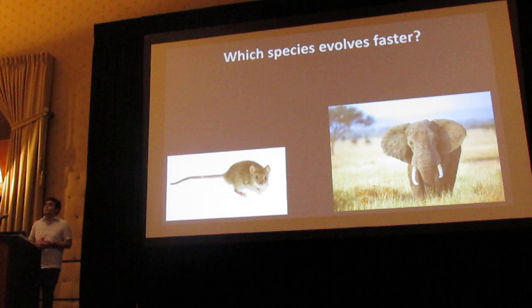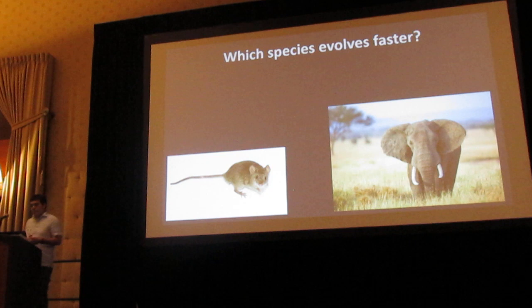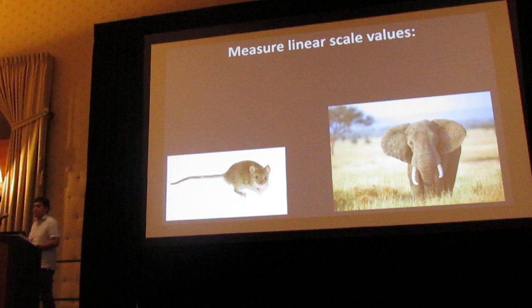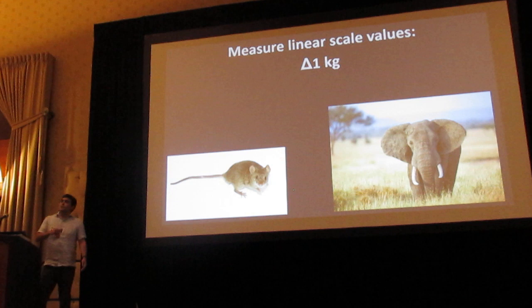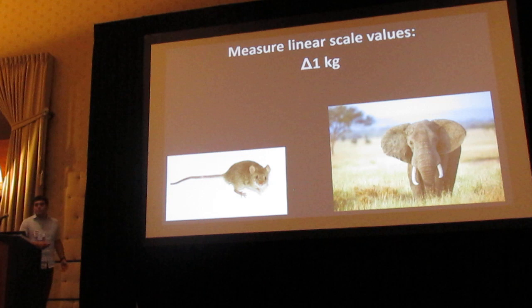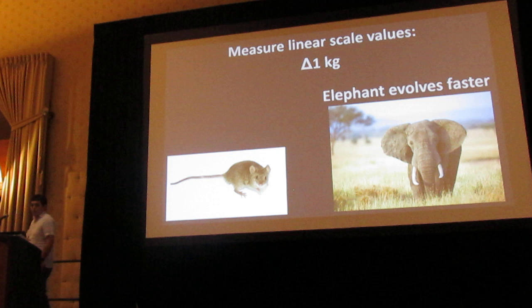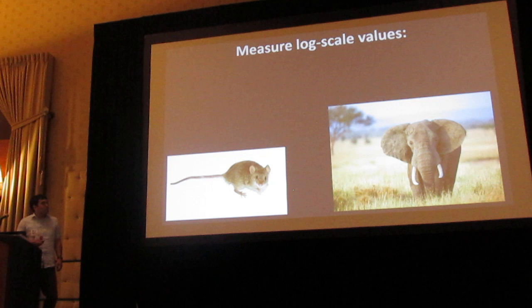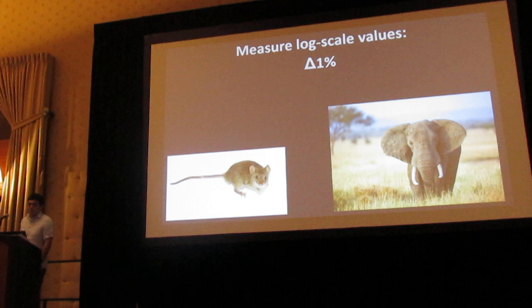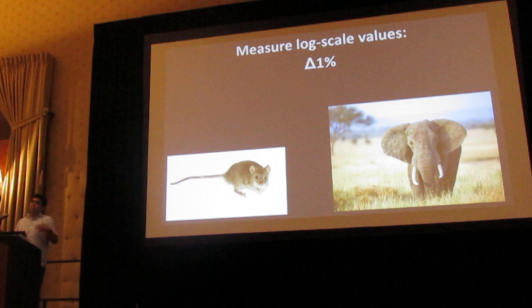It also depends — your expectations are going to depend on how I measure this and how I define it. If I measure linear scale values and say there's a change of one kilogram, which of these is more likely to evolve a change of one kilogram? Probably the elephant. So by that definition, elephants evolve faster. However, we know we should probably log-transform body size traits, because changes on the log scale correspond to a percent change — say plus or minus one percent. Then if I say which is more likely to evolve that much, the rates are probably pretty similar, all else being equal.